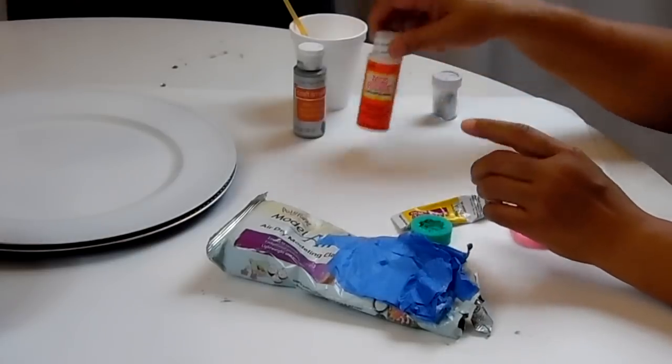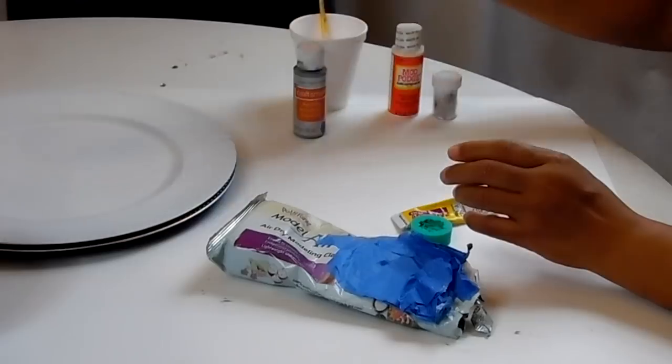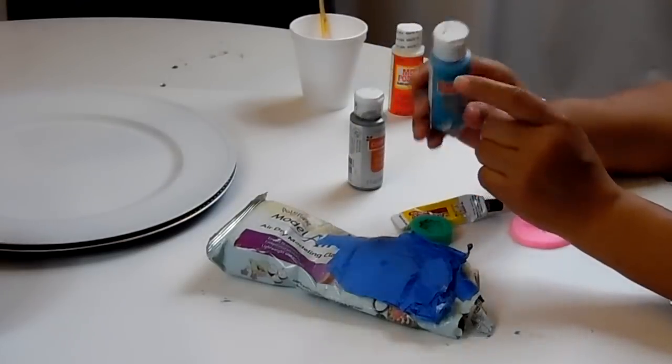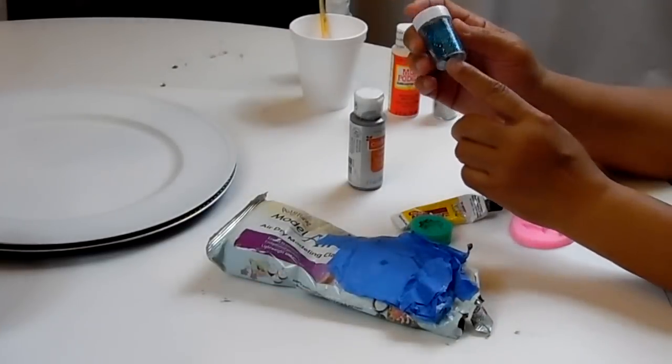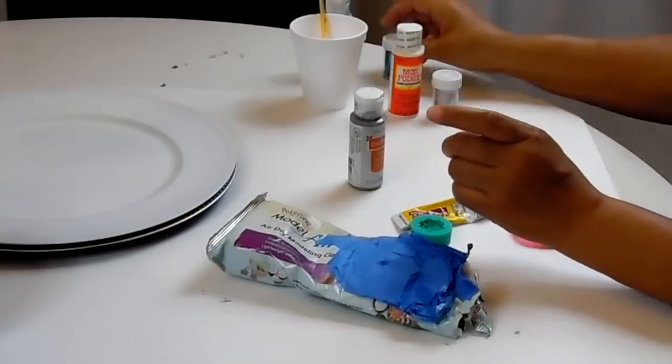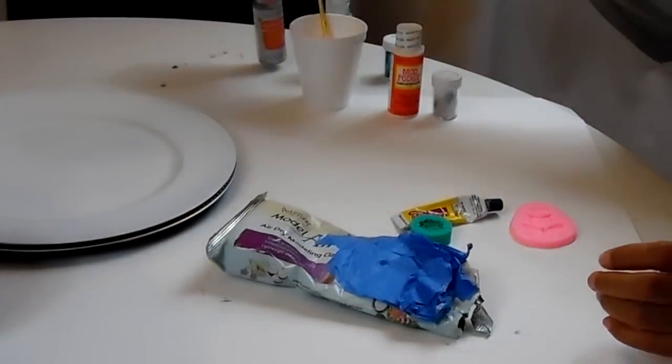I have some glitter here, some Mod Podge, some water brush and a cup and some silver acrylic paint. I also have some turquoise just in case I decide to go blue and I have this really beautiful blue glitter as well so I'm going to figure this out as we go. Alright so guys it's really simple this is what we're going to do.